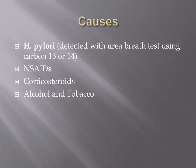One of the most important causes of peptic ulcer disease is H. pylori, which can be detected with urea breath testing using carbon-13 or 14. NSAIDs is another important cause of peptic ulcer disease, as are corticosteroids. Other contributing factors include alcohol and tobacco use.